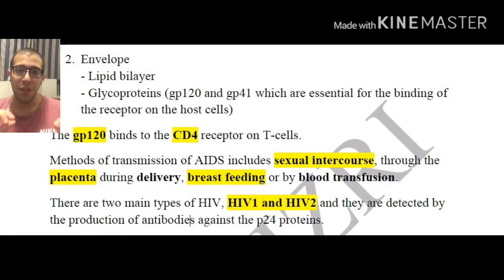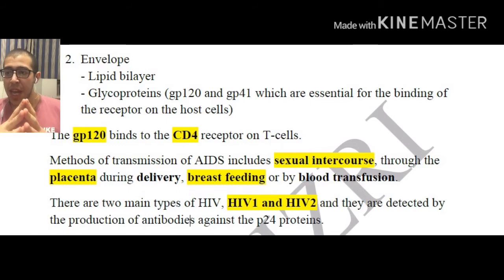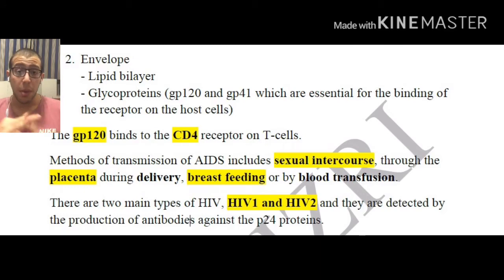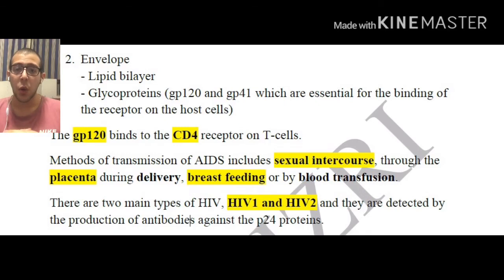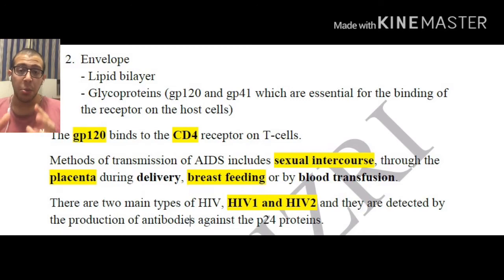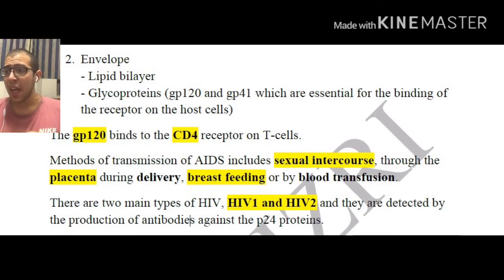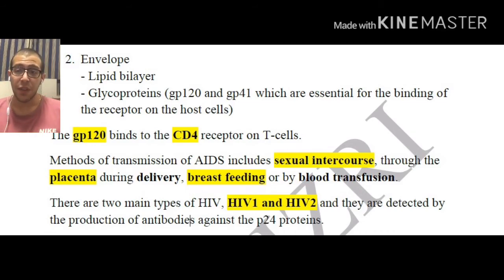The methods of transmission of AIDS include sexual intercourse, transmission through the placenta during delivery, breastfeeding, and blood transfusion. For the most part it occurs via sexual intercourse, while the rest occur at a much lower margin. There are two main types of HIV — HIV-1 and HIV-2 — more prevalent in different continents, and they are detected by the production of antibodies against the p24 protein.